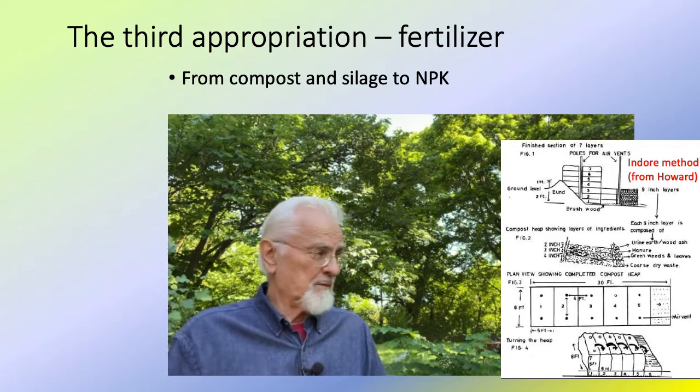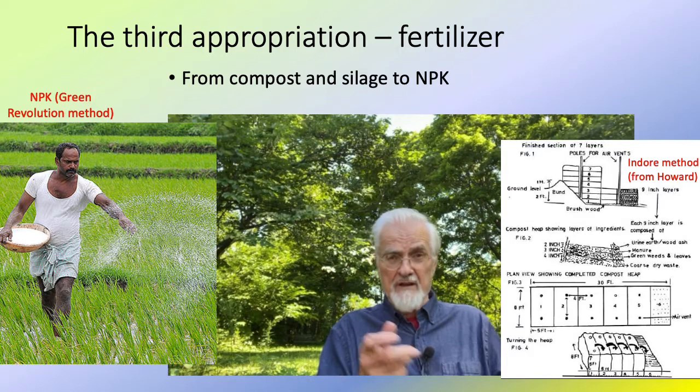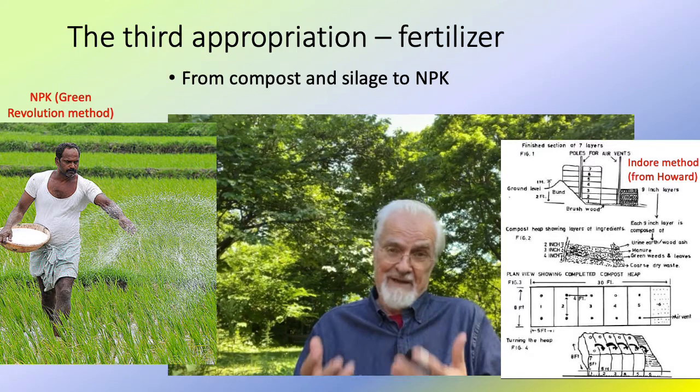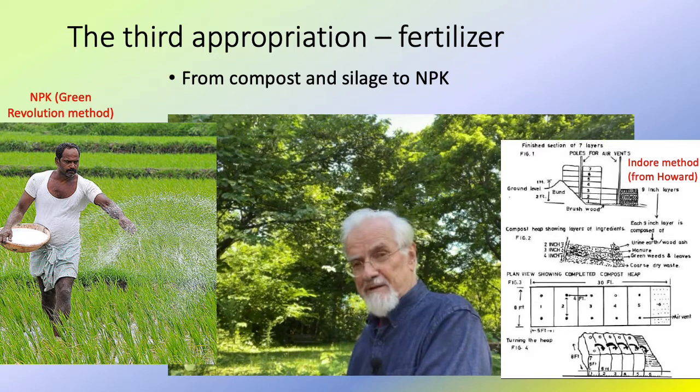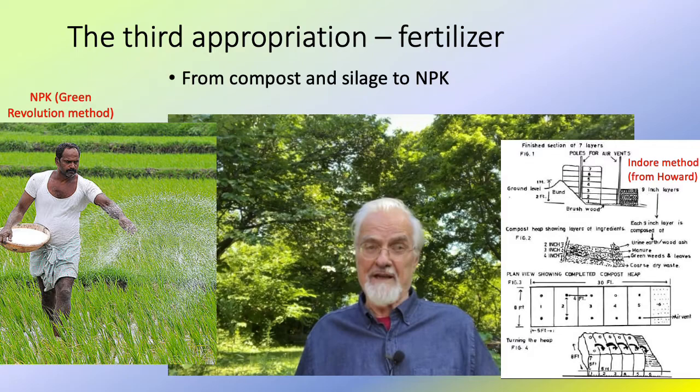The appropriation moves from composting management to chemical fertilizer management. An Indian farmer taking little pellets of NPK — nitrogen, phosphorus, and potassium fertilizer — and just throwing them around is a lot easier than going through the whole composting process. But everything in the composting process is owned by the farmer, while those white pellets come from a fertilizer company and are very expensive. The fourth appropriation is the seed stock.